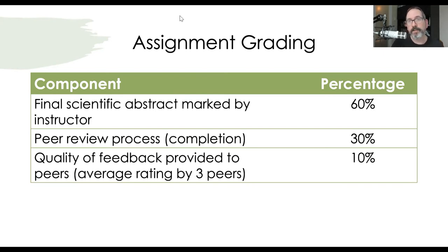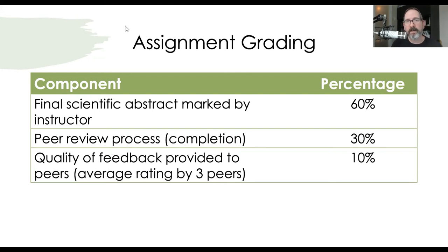You can customize that within Peer Scholar and automate that entire process. You can set it up in Peer Scholar to say submitting a piece of work gives you four points, the rubric is out of 10 points, engaging in the peer assessment of others is worth three points — and it will automatically tally all those marks. You can also have TA and instructor marking built right in, and Peer Scholar will also auto-tally.